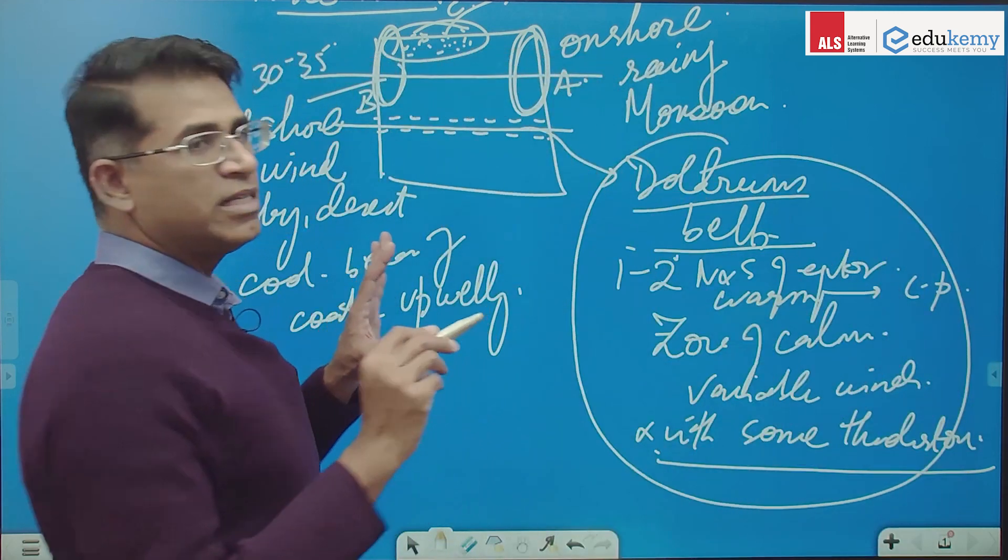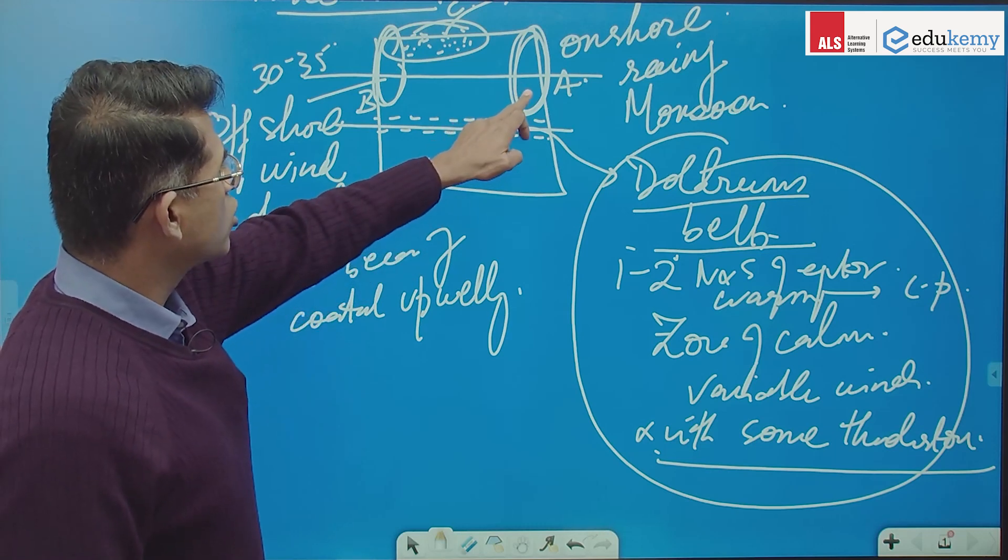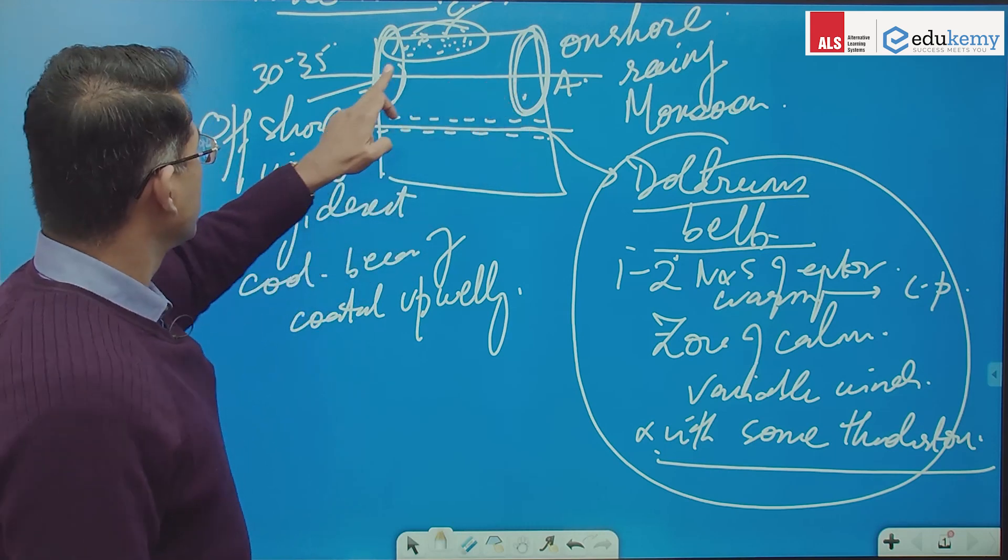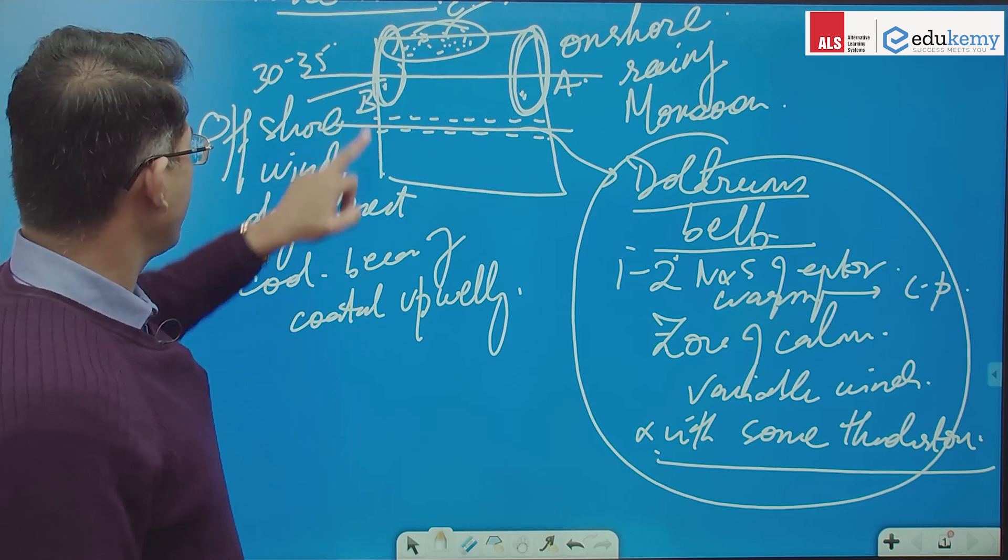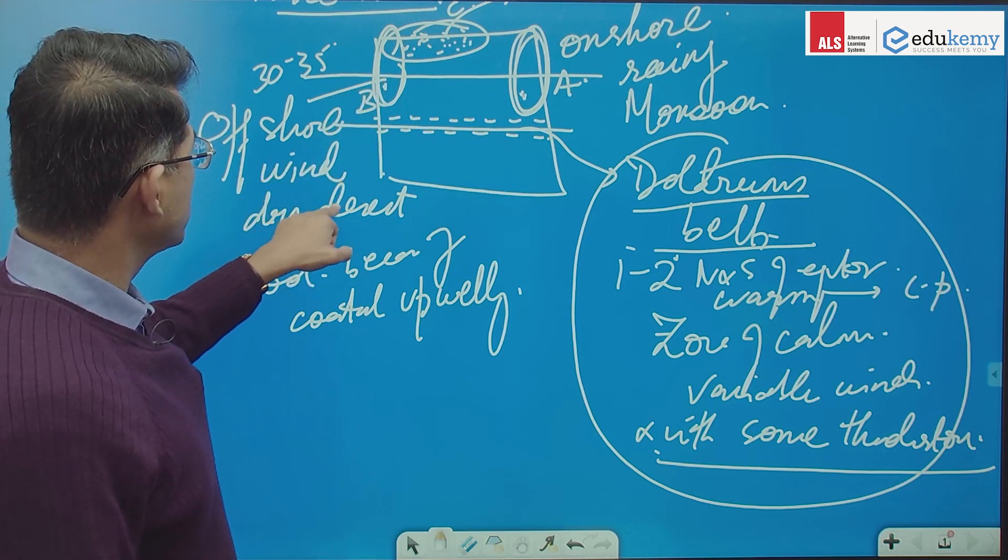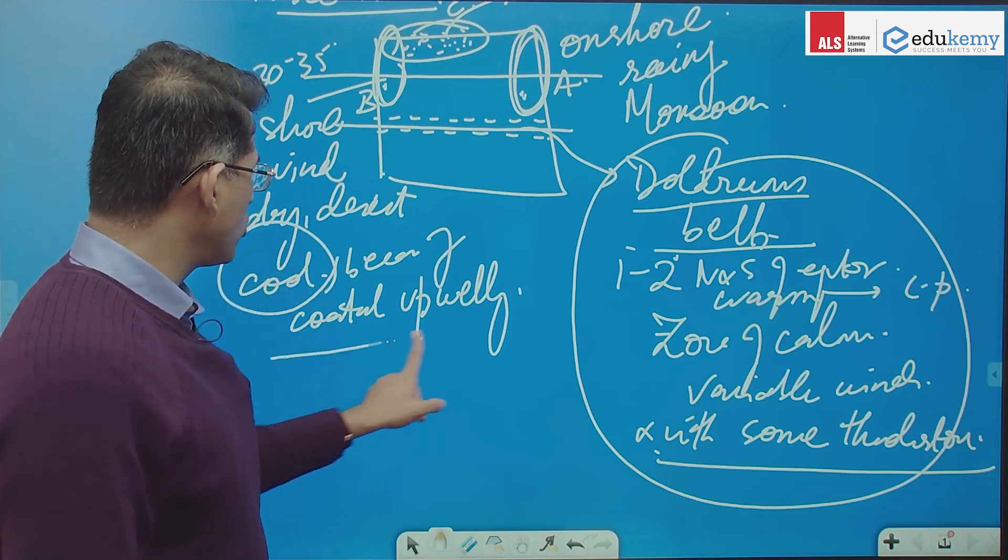So do you remember these, say three, four things: onshore rainy conditions, monsoon type of climate, offshore winds, we have dry conditions, we have deserts and it is also cool because of coastal upwelling,